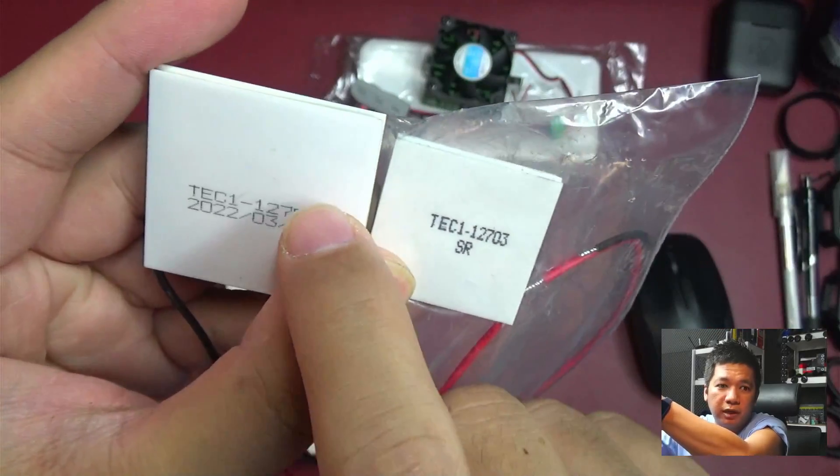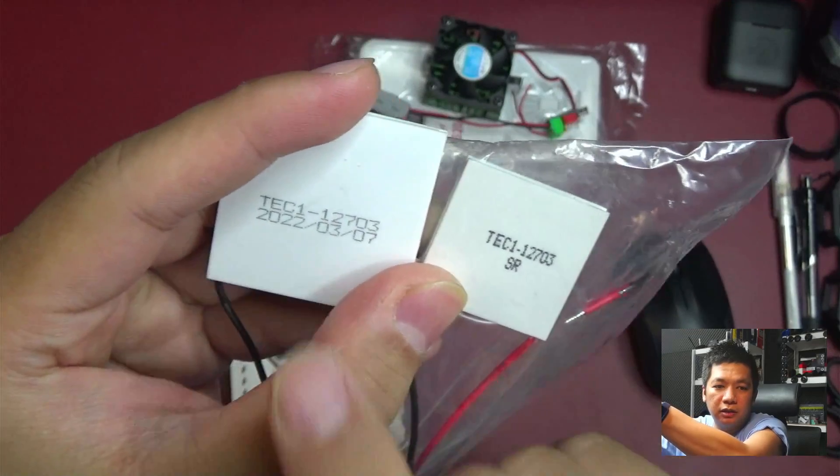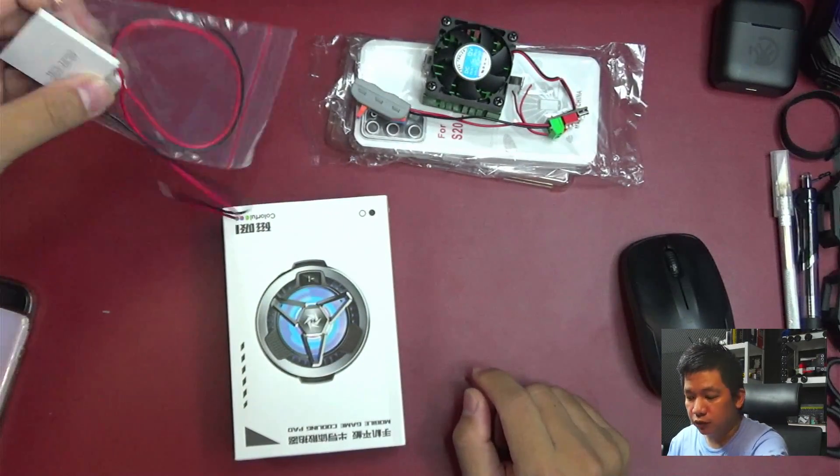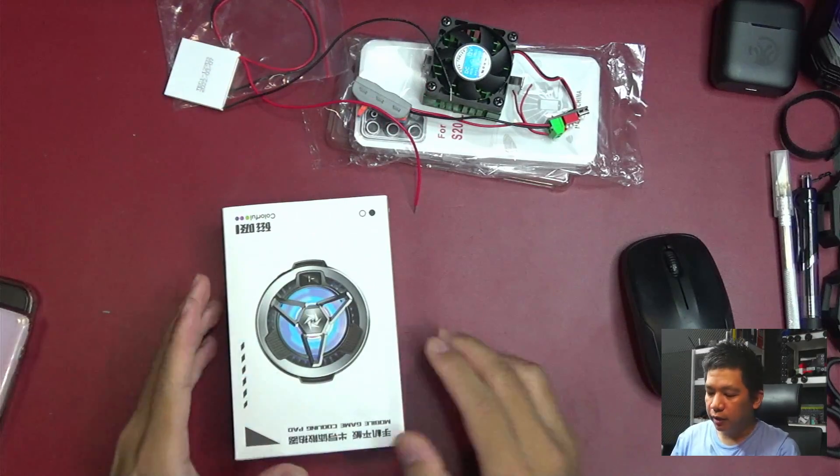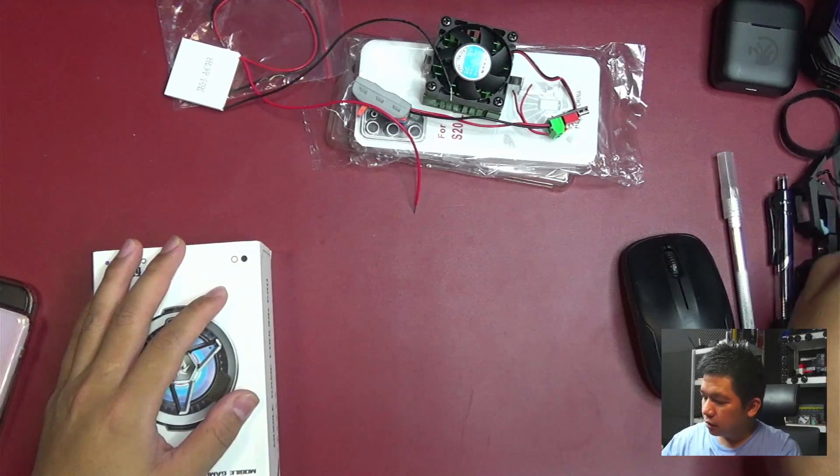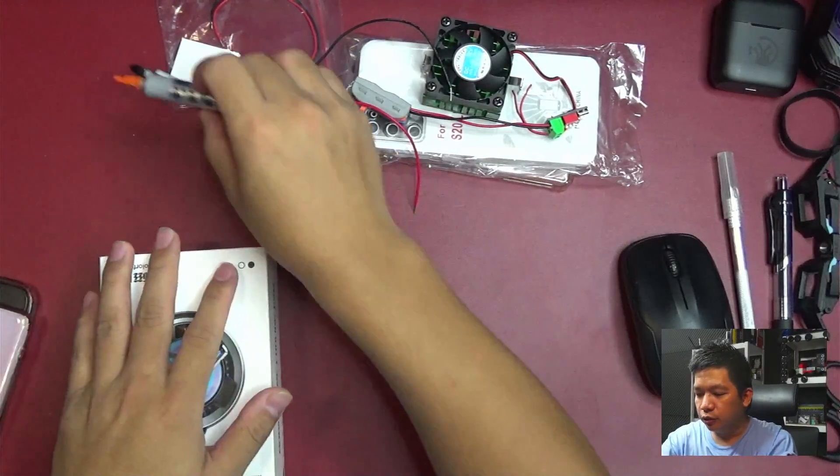Harusnya kan ini main di 15 volt, tapi kita mainnya di 12 volt aja. Jadi harusnya masih kuat. Chargernya jadi rata-rata kuat 13 volt, 12 volt 3 ampere. Sama pakai pastanya nanti GD900. Udah paling gitu doang nanti.